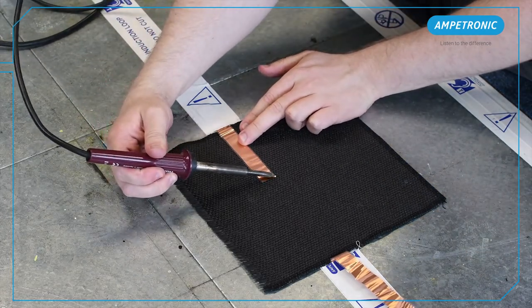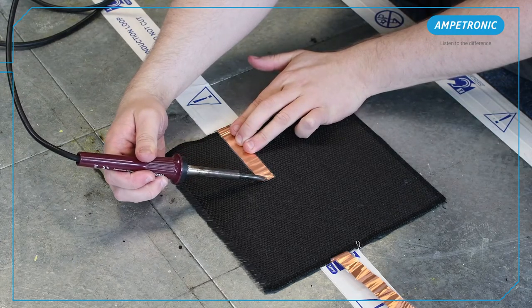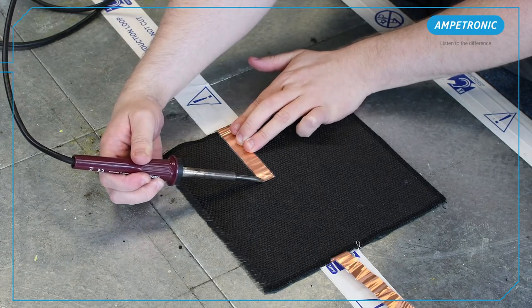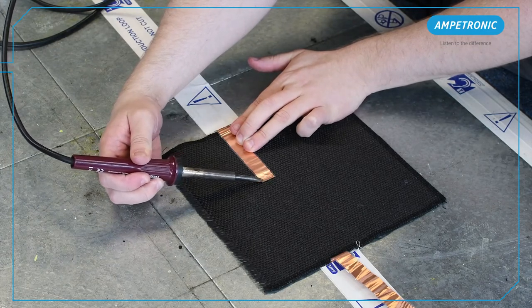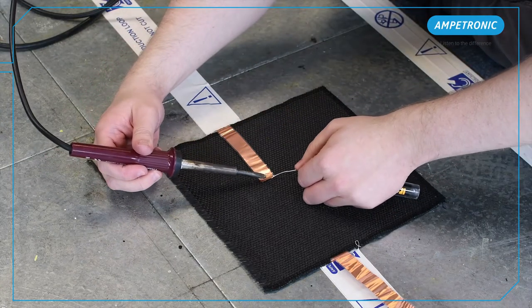You should be using a good quality, high power soldering iron with a reasonably wide tip. It can also be useful to have a heat proof mat or similar to work on, as soldering directly on a cold concrete or metal floor can make the job more difficult.